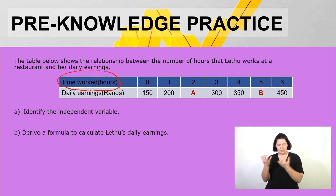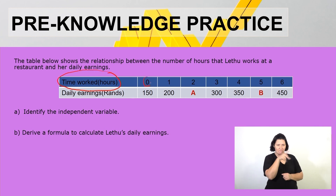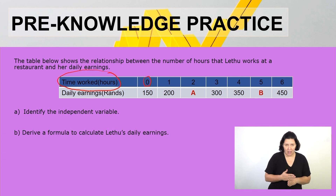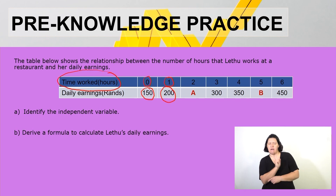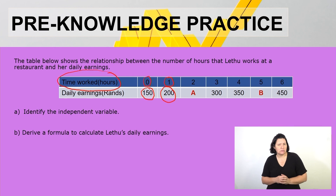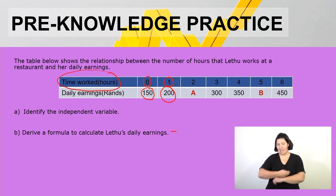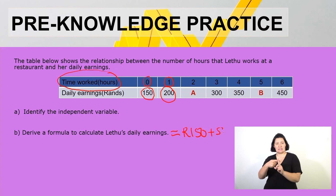Derive a formula to calculate Letu's daily earnings. Looking at the table, we can tell that even before she starts working, she is already earning 150 rands. For the first hour she has worked, the daily earning will be 200 rands — it has increased from 150 to 200. This means there is a fixed cost. So the formula to calculate daily earnings will be: earnings = 150 + 50 × n, where n represents the number of hours worked.